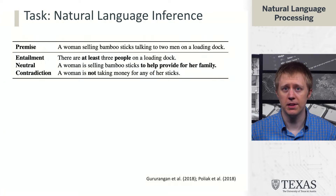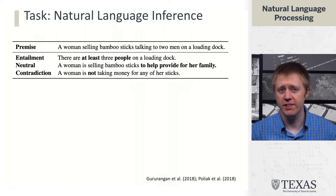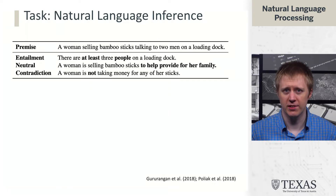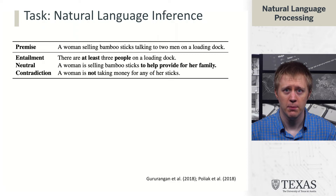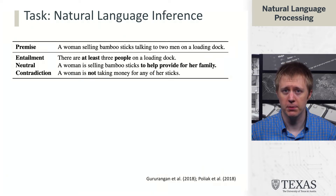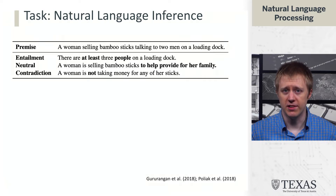'A woman is selling bamboo sticks to help provide for her family' is neutral, because we can't tell it's incorrect, but we don't know whether she's helping provide for her family or selling them for some other reason. And finally, 'a woman is not taking money for any of her sticks' is a contradiction — that's just wrong, she's selling them.